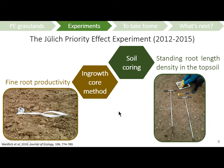In this experiment, we were very interested in root dynamics and wanted to know if the experimental treatments affected below-ground productivity in terms of root productivity. To answer this question, we did two things: we collected soil cores from the field to measure the standing root length density in the top soil region of the plots, and we also measured fine root productivity using the in-growth core method to follow fine root productivity over time.